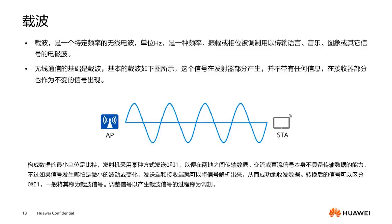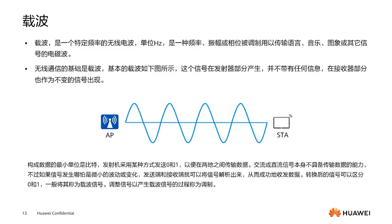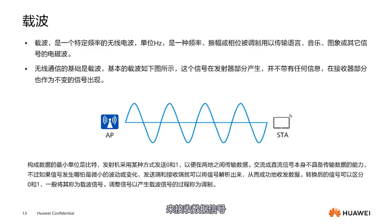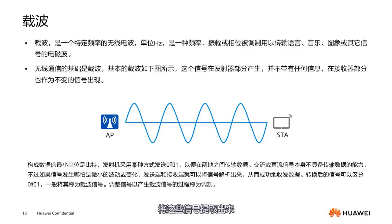Next up is the carrier. What is the concept of a carrier? It's actually quite simple. It is an electromagnetic wave with a fixed frequency — we call it the carrier. Using the carrier to transmit, we can load the data signal onto the carrier signal. The receiver uses the carrier's frequency to receive the data signal. The amplitude of the meaningful signal waves differs from that of the meaningless signals, and extracting these signals gives us the data signal we need.